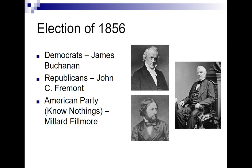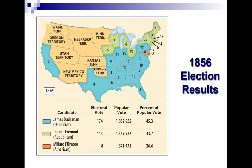Buchanan's going to win. The Democrats, at this point, are the largest party in the United States — the reliable, tried-and-true party. The Republicans don't have enough momentum yet to be a serious contender. If you look at the map, James Buchanan wins with 174 electoral votes and 45% of the popular vote. Fremont is going to get 114, mostly those northern border states and New England. And then Millard Fillmore gets a whopping eight votes. Democrats come out with a pretty clear victory here.